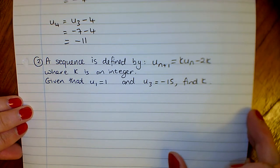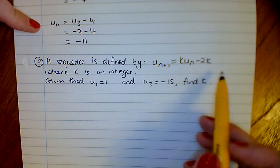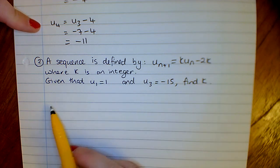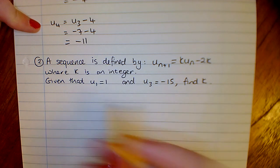Okay, our second one. A sequence is defined by un+1 equals kun minus 2k, where k is an integer, given that the first term is 1 and the third term is minus 15, find k.